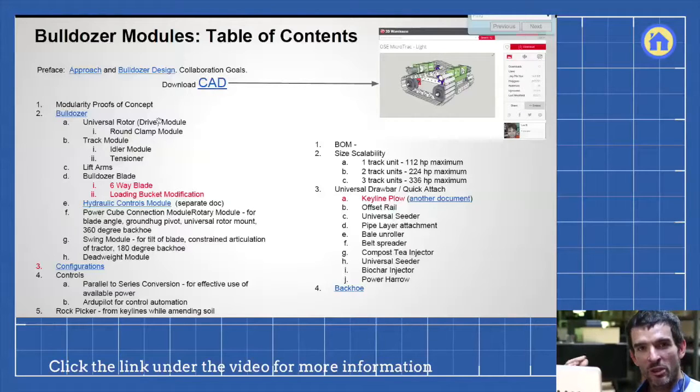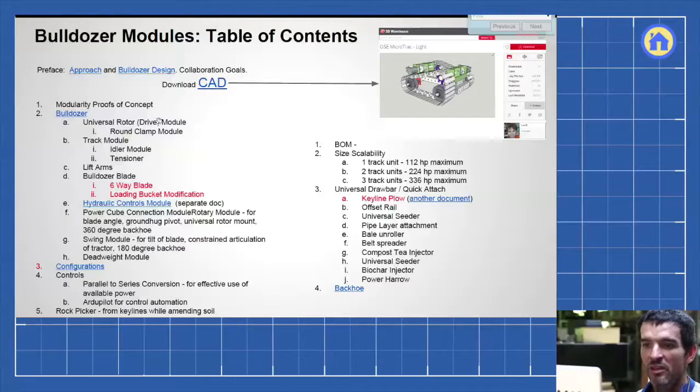First of all, we talk about absolute complete module-based design, such that a part can be used not just in the bulldozer, but many other applications. So the bulldozer starts with the main modules, starting with the universal rotor, the tracks, lift arms, bulldozer blade, and other modules.